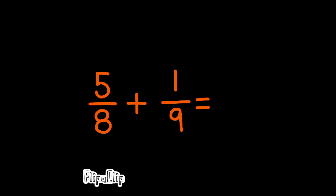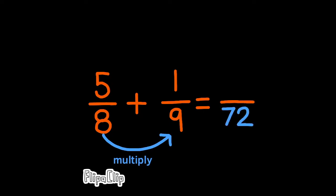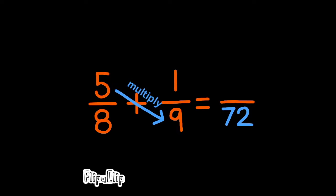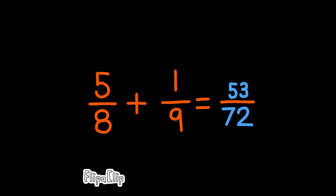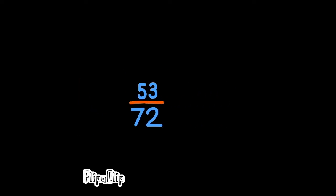Let's do one more, and then you can try one on your own. Remember the first step: multiply the denominators. Second step: multiply the left numerator by the right denominator. Third step: multiply the right numerator by the left denominator. Doing these steps transforms five-eighths plus one-ninth to forty-five plus eight over seventy-two. Forty-five plus eight is fifty-three, so the answer is fifty-three over seventy-two.